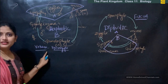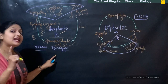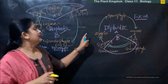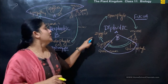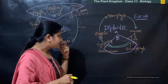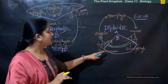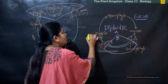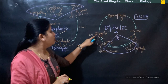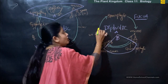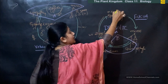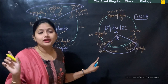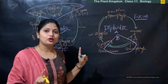An example for the haplontic life cycle is Spirogyra — these are algal forms. We had seen the thallus formation there. Moving on to the diplontic life cycle: here again we start from gametogenesis. When syngamy happens, a diploid zygote is formed. From this diploid zygote the main plant body is formed, which means the sporophytic stage is very dominant here — not the gametophytic stage.